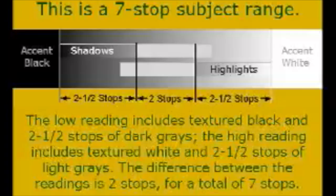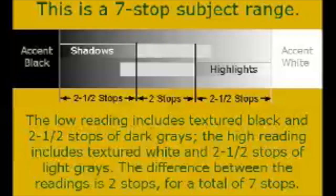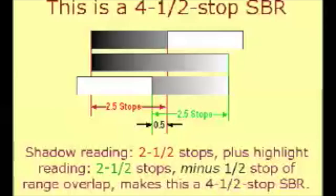In this illustration, the subject range comprises 2 and a half stops of shadows, 2 and a half stops of highlights, plus the 2-stop difference between the readings measured from center to center, for a total SBR of 7 stops.